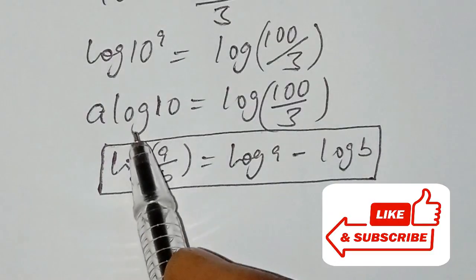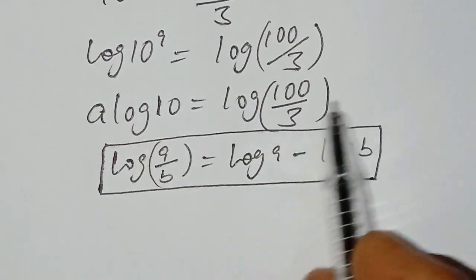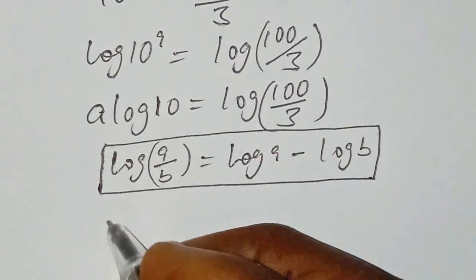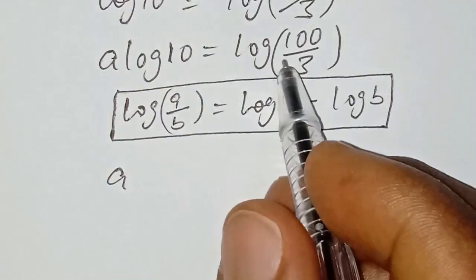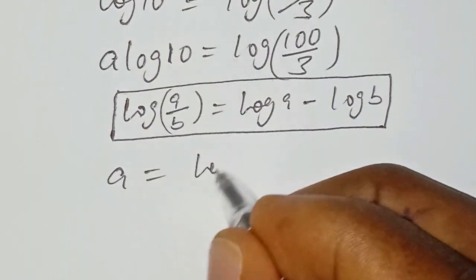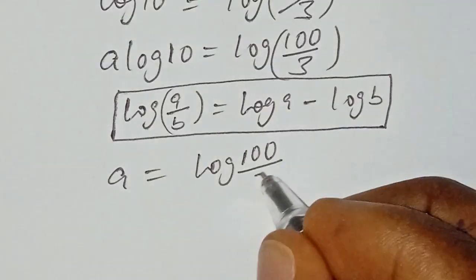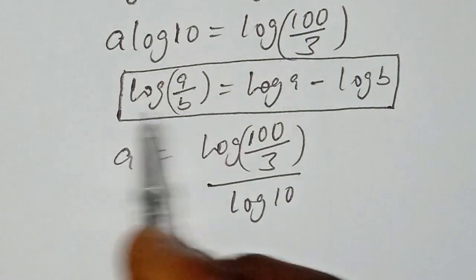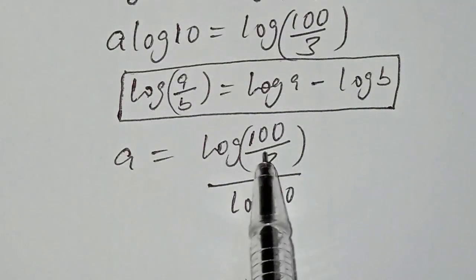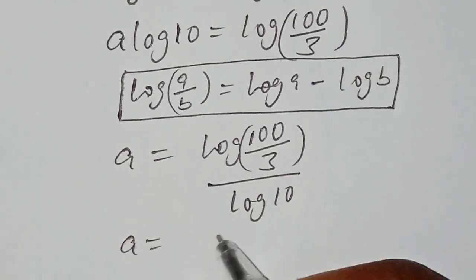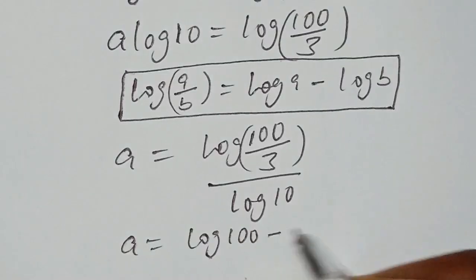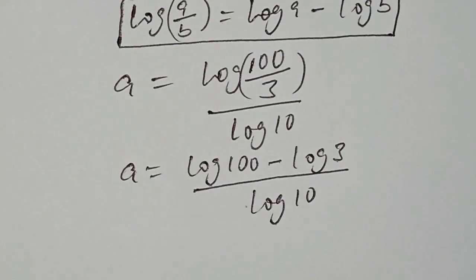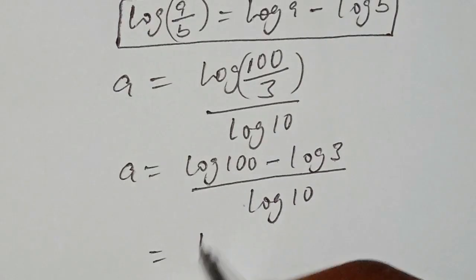The next step involves isolating a and simplifying the right-hand side. To isolate a, we divide both sides by log of 10. So we have a equal to log of 100 over 3, divided by log of 10. Using the quotient rule, a equals log of 100 minus log of 3, all over log of 10.